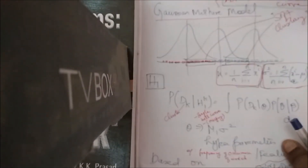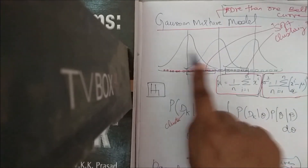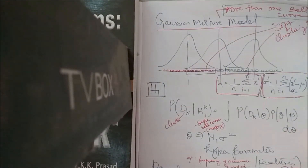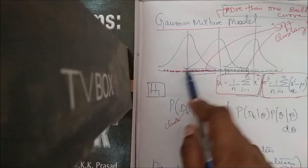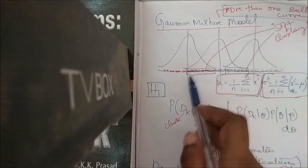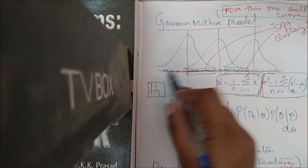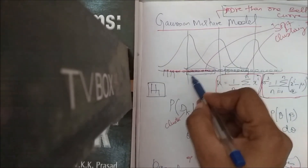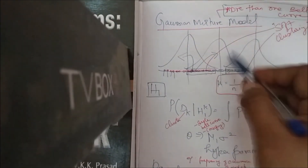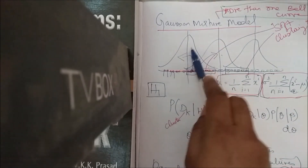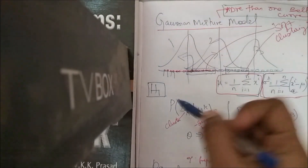If you have many overlapping bell curves, we call that a Gaussian Mixture Model. The red points belong to one curve, blue to another, green to a third. In overlapping regions, a point could belong to either the red or blue curve — meaning a data point could be assigned to cluster 1 or cluster 2. To decide, you look at which distribution the point is more closely related to.